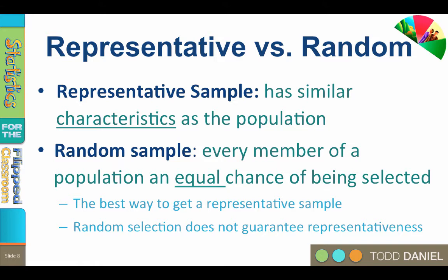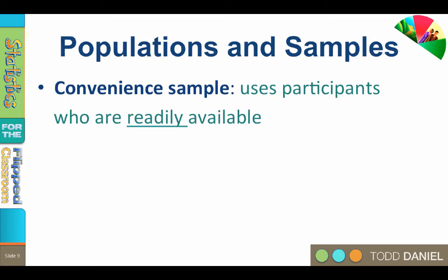Random selection is the best way to get a representative sample, but it does not guarantee a representative sample. Truly random sampling is difficult to do, especially when we are studying human beings. Sometimes we don't have the time, money, or availability to do truly random sampling.